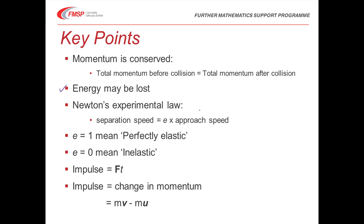Now Newton's experimental law. If you take the speed of approach and multiply it by E to get the separation speed, what would that mean if E equals 1? It means the speed of separation would be exactly the same as the speed of approach — like a perfect rebound with no loss of speed. On the other hand, if E equals 0, then it doesn't matter what your approach speed is. Multiply by 0 and the separation speed is 0 — like throwing a beanbag against a wall; it's not going to rebound.